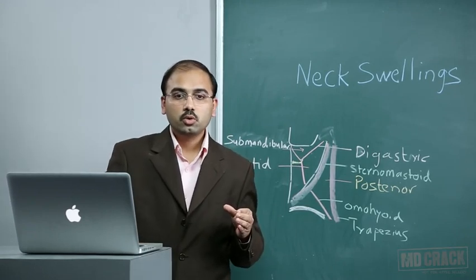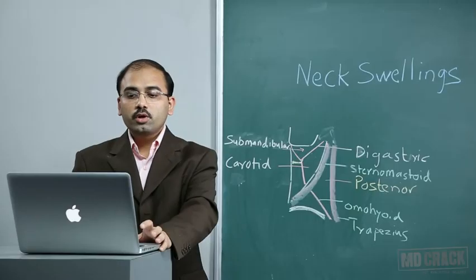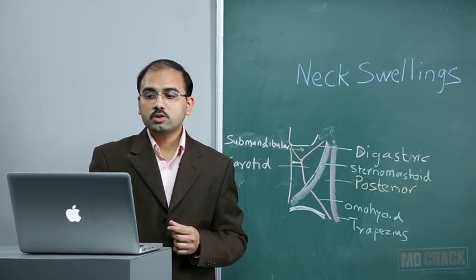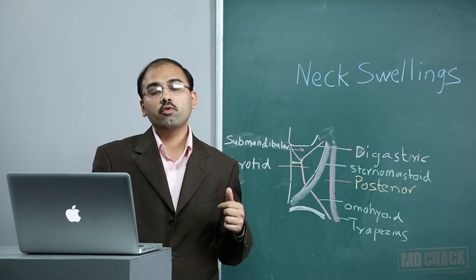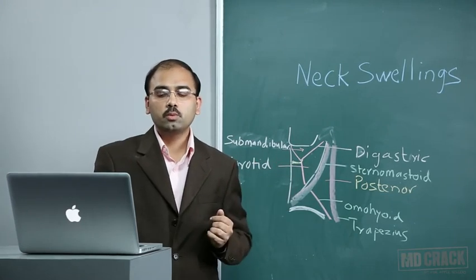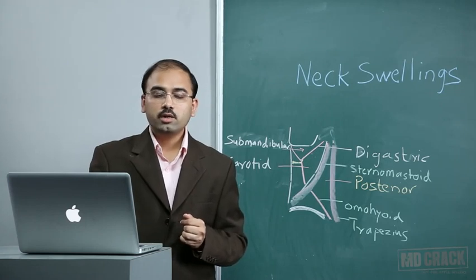Now we cover congenital derivatives of branchial clefts. The mature structures of the head and neck are embryologically derived from six pairs of branchial arches, their intervening clefts externally and pouches internally. Congenital cysts, sinuses, or fistulas result from failure of these structures to regress or their persistence in an aberrant location. Understanding embryology is essential, as surgery without it may result in injury to important structures traversed by these tracts.